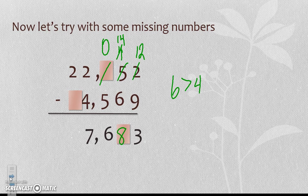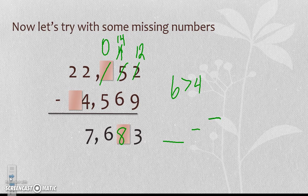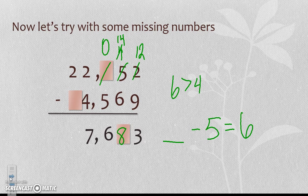Now I know that I'm taking 5 away from something to get 6. So my question is, something minus 5 has to get me 6. Well, I know that 11 minus 5 is equal to 6.